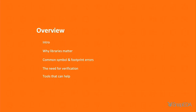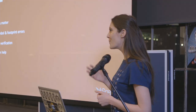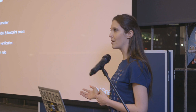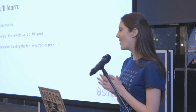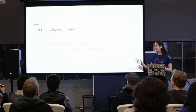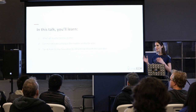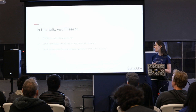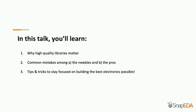What I want to talk about today is the errors that we commonly see at SnapEDA when engineers are building symbols and footprints, and the implications that can have further down the line with your designs. I'll run through why high-quality libraries matter, common symbol and footprint errors we see with both new and professional engineers, the need for verification in your design flow, and some tools that can help in your design process.